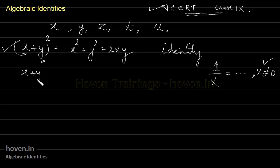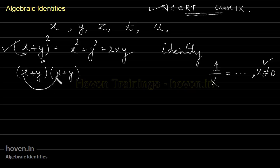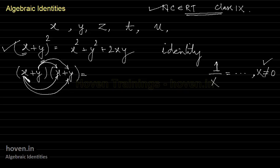But how do we arrive at this identity? Let me briefly explain. x plus y whole square means x plus y multiplied by x plus y. To open these brackets, this x is first multiplied by this x, then multiplied by this y, and then this y is multiplied by this x, and this y is multiplied by this y. x multiplied by x is x square. Since no sign is mentioned to the left of x, it is taken as plus by default, so x into y is xy.